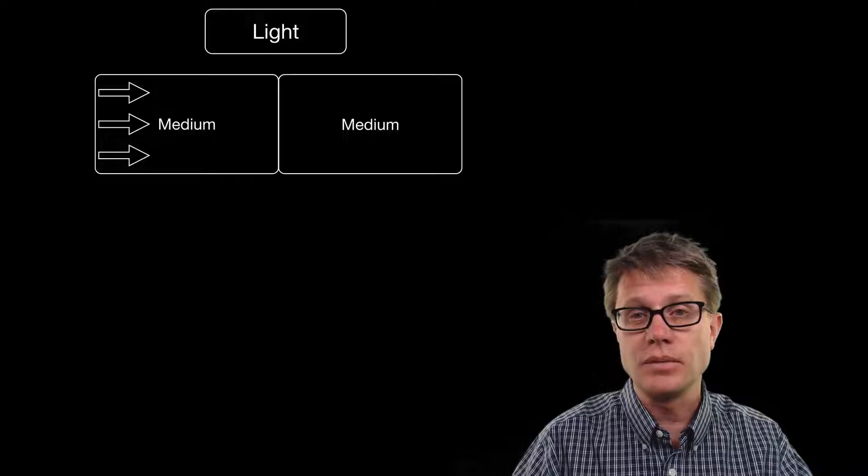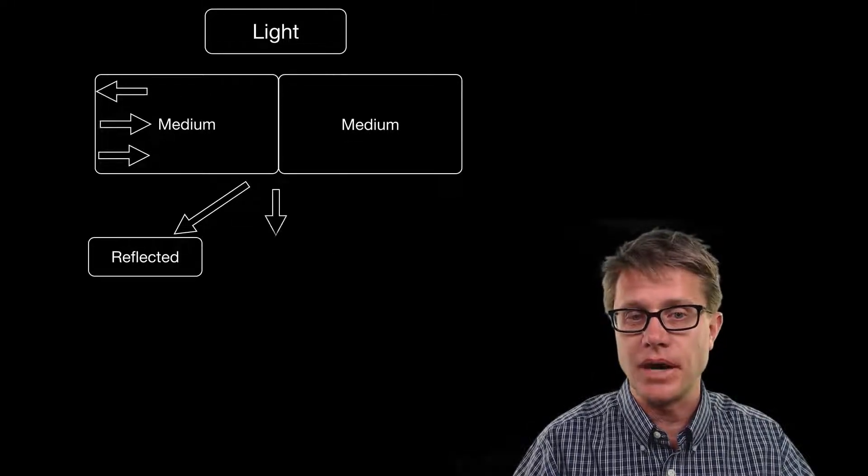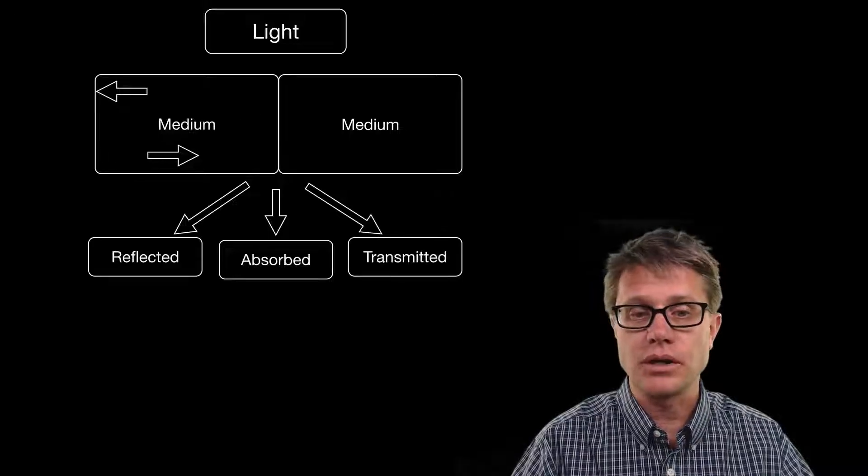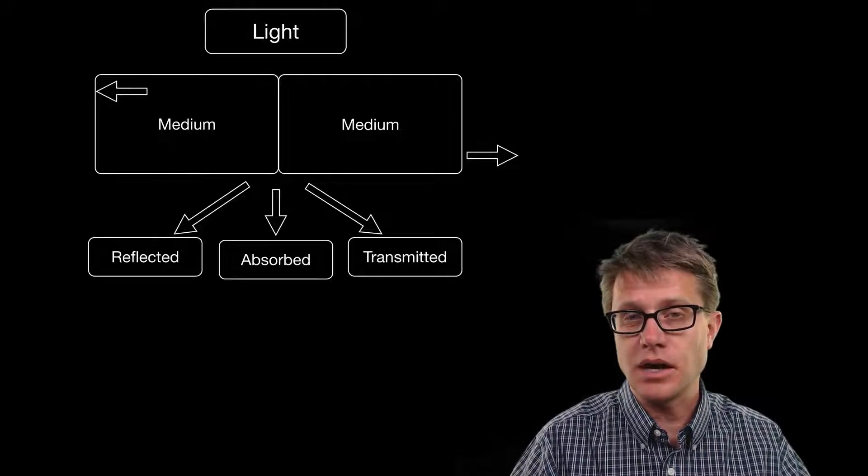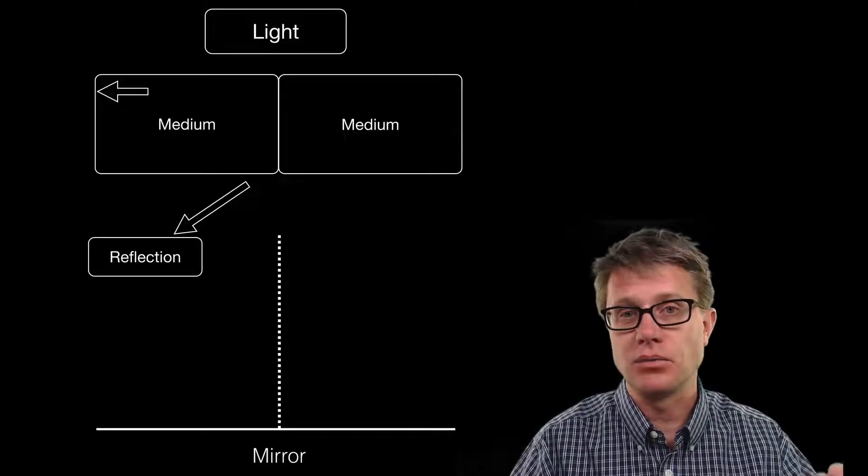And so as light moves from one medium to another, one of three things can happen: it can be reflected or bounce, it can be absorbed, or it can be transmitted. And when we are talking about specular reflection we are just talking about the light that is actually reflected.